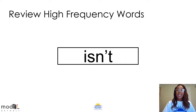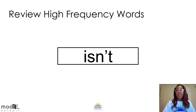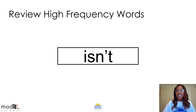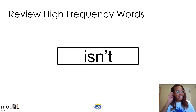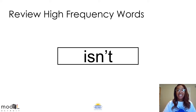Next up is the word isn't. This word is isn't. Read with me: isn't. Read this word with me again: isn't. When you see this word, you will say isn't. All right, boys and girls, it's your turn again. What's this word? That's right, this word is isn't. Wave at me if you were able to read the word isn't correctly.